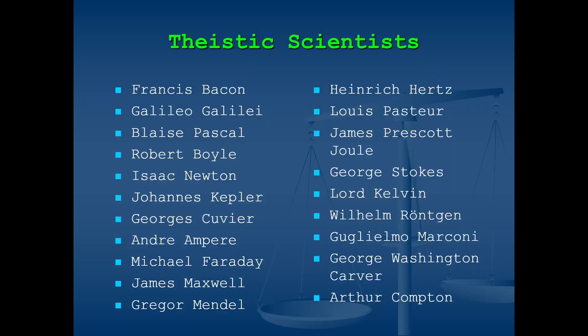By the way, there was a beginning and we will cover that in a future video. The vast majority of the groundbreaking scientists in history believed in a creator. I only included names you might recognize from the scientific laws or units of measurement for which they were honored. All of these scientists knew that the scientific method was the ideal tool to understand the order that existed in the created universe. So when someone invokes naturalism to prove there is no creator, they are using circular reasoning.